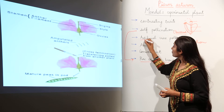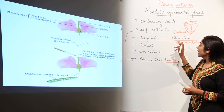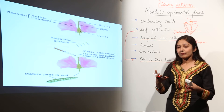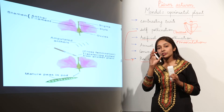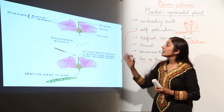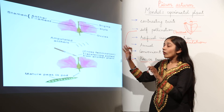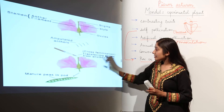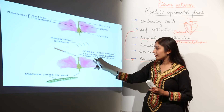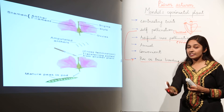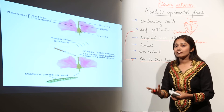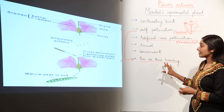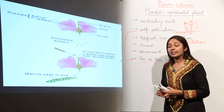Remember the most important point: when Mendel wanted to cross-pollinate the pea plant, he used the technique of emasculation — removing the anthers or stamen, which is the male reproductive organ composed of anther and filament. He then dusted the desired pollen grains on the stigma of the flower to obtain the desired traits. Artificial cross-pollination was thus easily achieved for Mendel using emasculation.